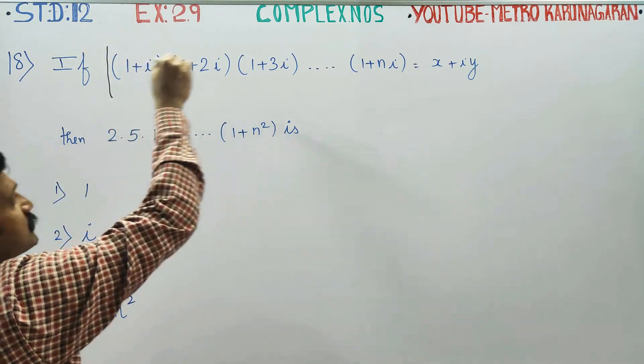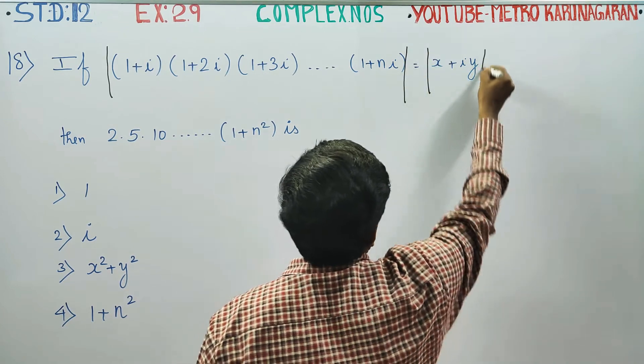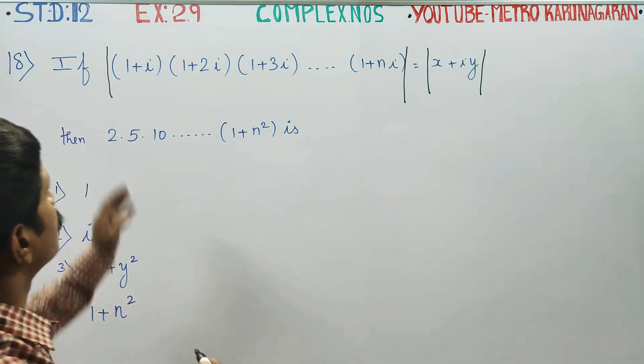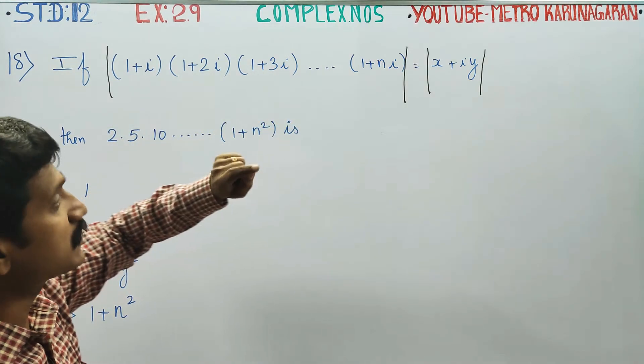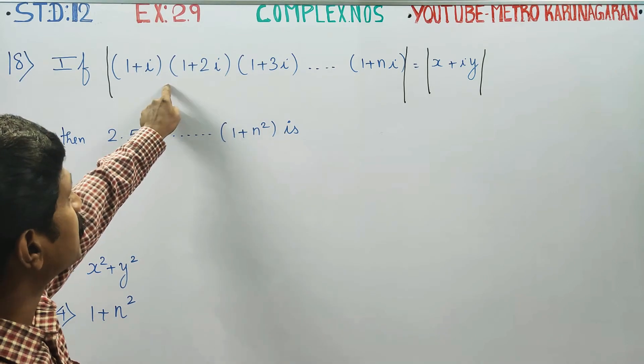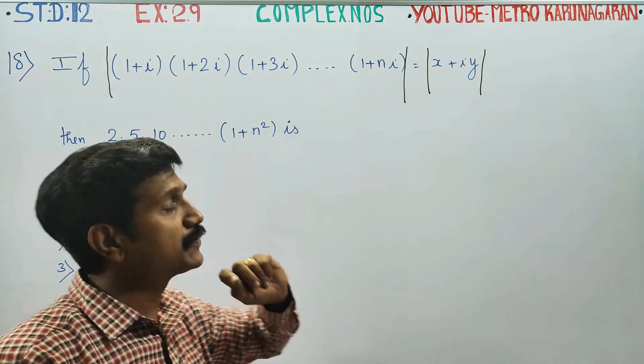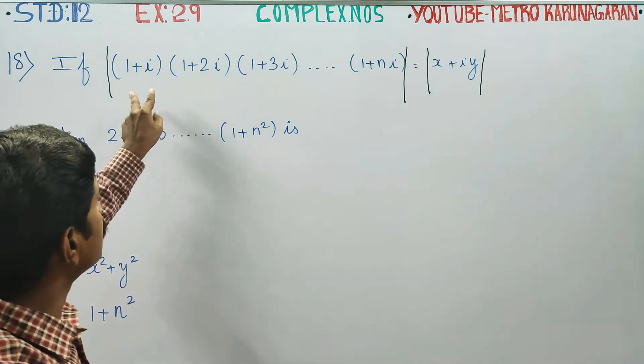You just take modulus on both sides. I am taking modulus on both sides. Since modulus handles multiplication and division, total modulus is to take modulus.